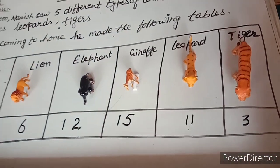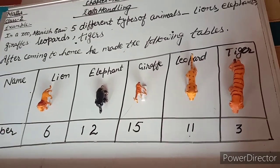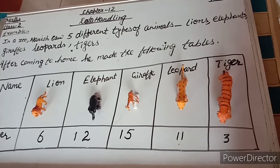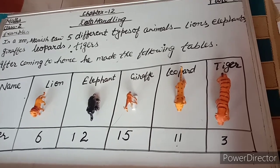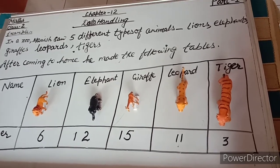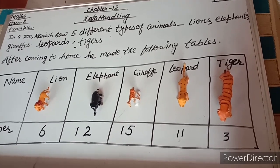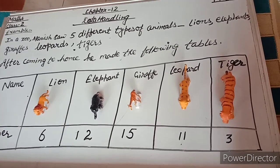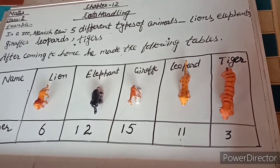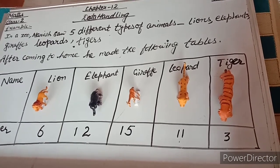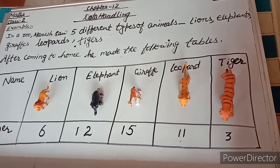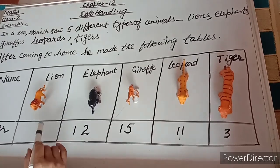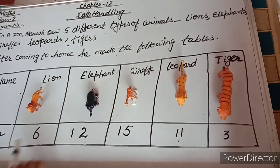Now observe the questions and give their respective answers. How many elephants did he see? He saw 12 elephants. Now, how many lions did he see? Six.